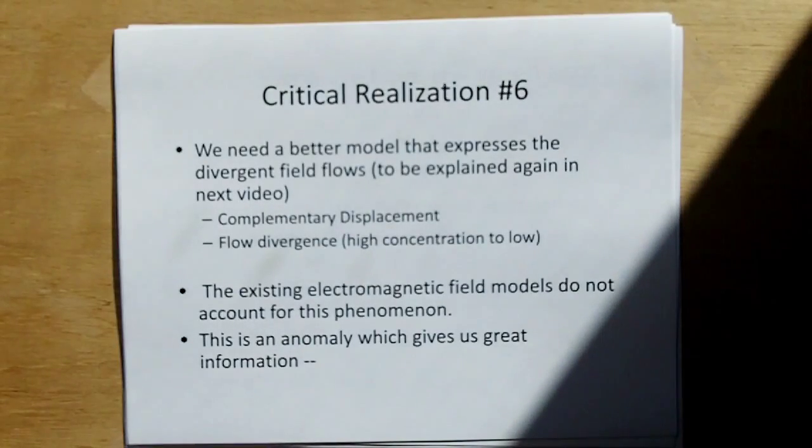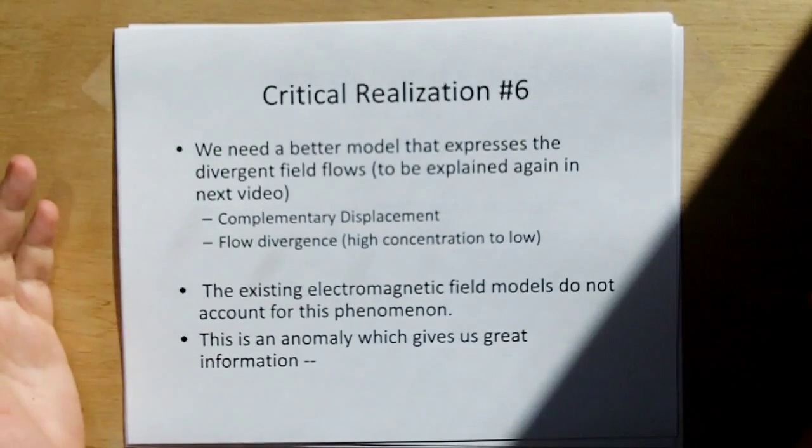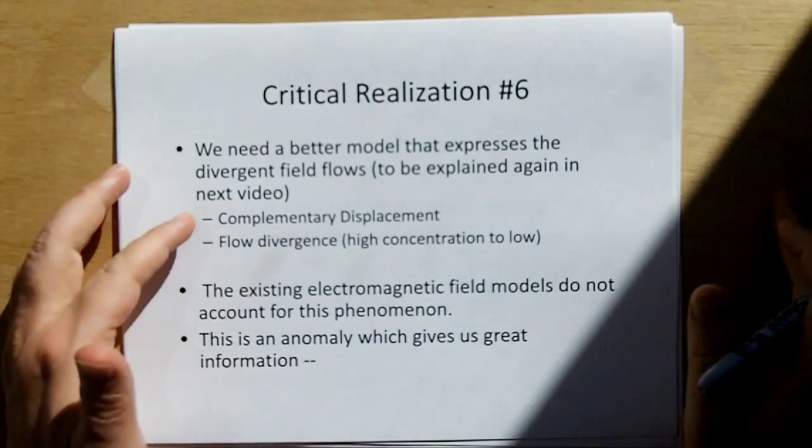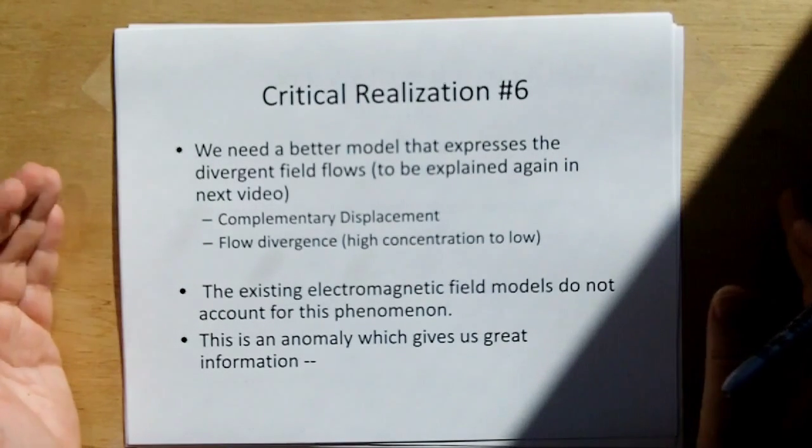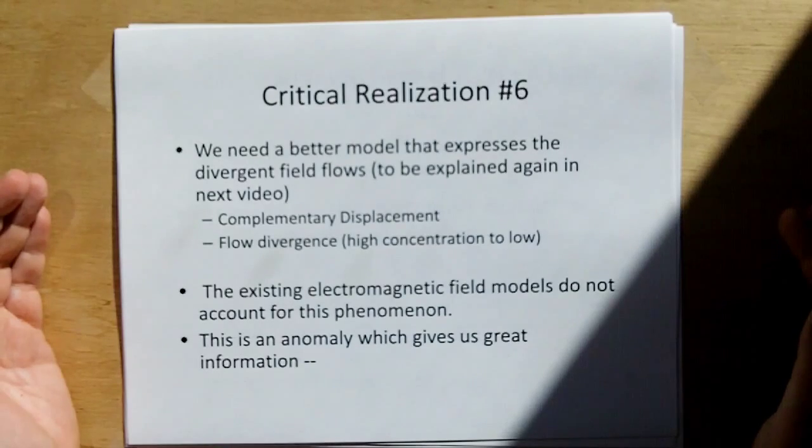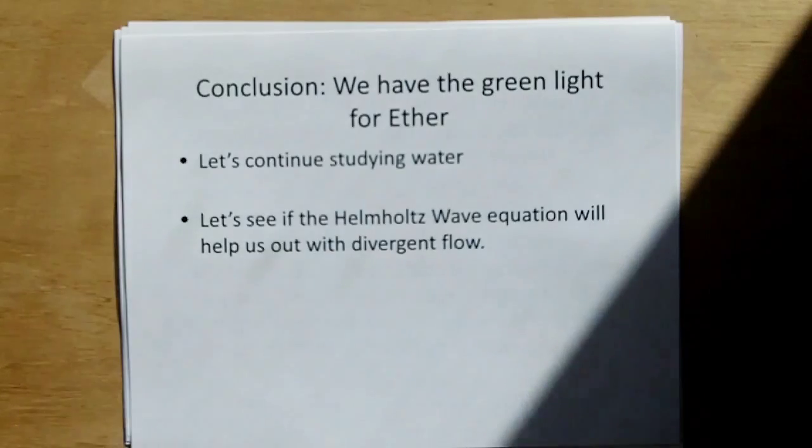Again, this is what we see. We need better models that express the divergent field flows to be explained again in the next video, which one is complementary displacement and flow divergence. And we have to remember the existing electromagnetic field models do not account for this phenomenon. And this is an anomaly which gives us great information. This diffraction anomaly. And we have the green light for aether.